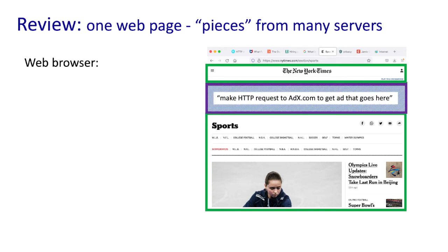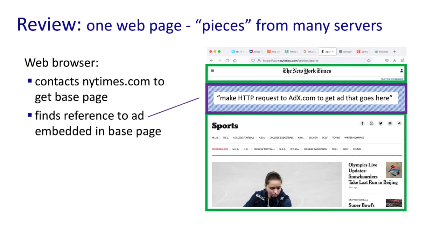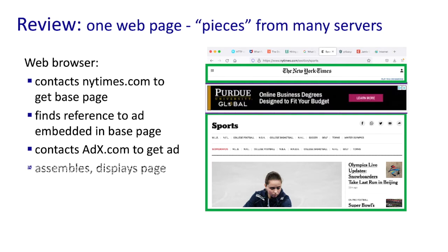Here are the steps taken by my web browser. First, my browser contacts NewYorkTimes.com to get the base HTML file. My browser then parses that base HTML file and finds a reference to the URL of a web server — say, adx.com. My browser then contacts adx.com to get the ad. The ad is returned. My browser assembles the page from these two parts — the content from the New York Times and the ad — and then displays the page.